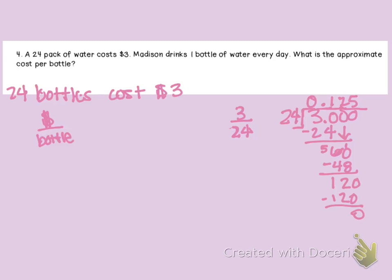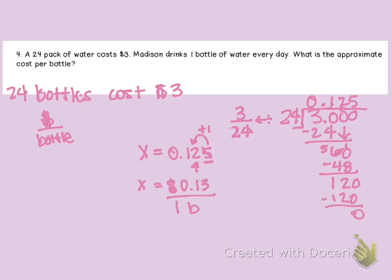You should have gotten three over 24 — money over bottles — which is three divided by 24, and X equals 0.125. Since we are talking about money, it stops at the hundredths place. We look at the next digit: if it is five or more, we add one and drop it. So X equals approximately 13 cents, meaning 13 cents per one bottle.